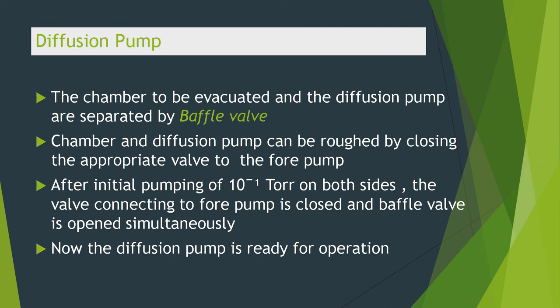The chamber to be evacuated and the diffusion pump are separated by a baffle valve. The chamber and diffusion pump can be roughed by closing the appropriate valve to the fore pump. After the initial pumping reaches 10⁻¹ Torr on both sides, the valve connecting to the fore pump is closed and the baffle valve is opened simultaneously.